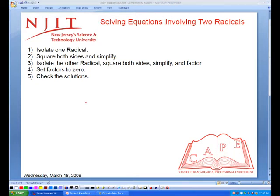In order to do this, we isolate one radical, square both sides, and simplify. Isolate the other radical, square both sides, simplify, and factor. Set factors to zero, and then check the solutions.